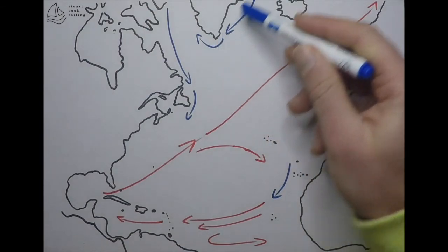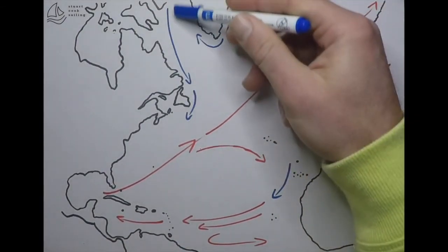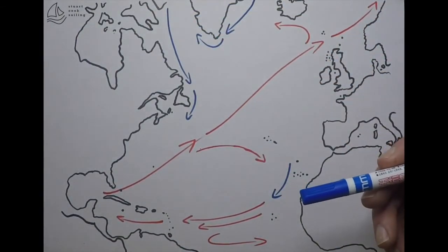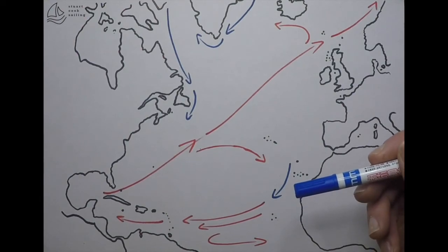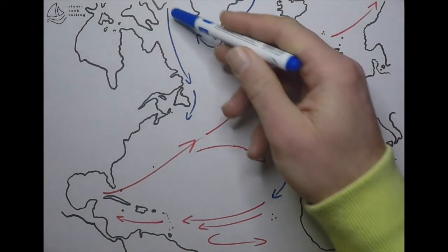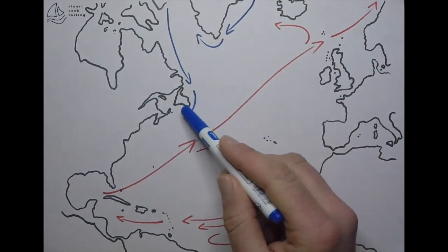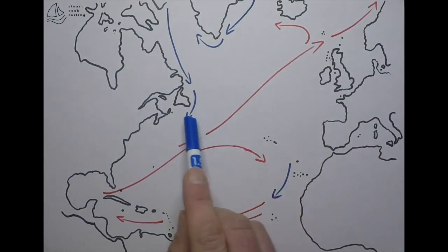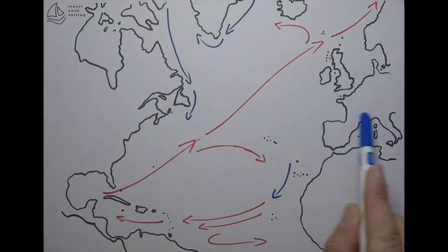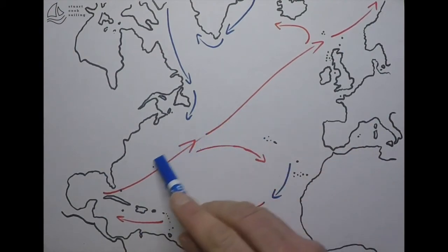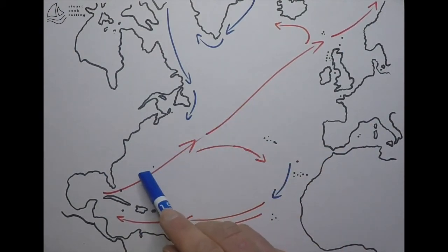Of course, these cold currents are coming down from the poles. They are potentially bringing icebergs and ice with them as well. You can see how far south these icebergs and ice flows can get—similar latitudes to Central Europe. It just goes to show how much heating is given by this Gulf Stream and the North Atlantic drift.